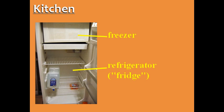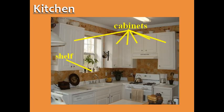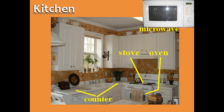Food that needs to be very cold, like ice cream, is kept in the freezer. Other foods are kept inside cabinets or on a shelf — the plural is shelves. You can prepare food on the counter, cook food on the stove or in the oven, and heat it up in the microwave.